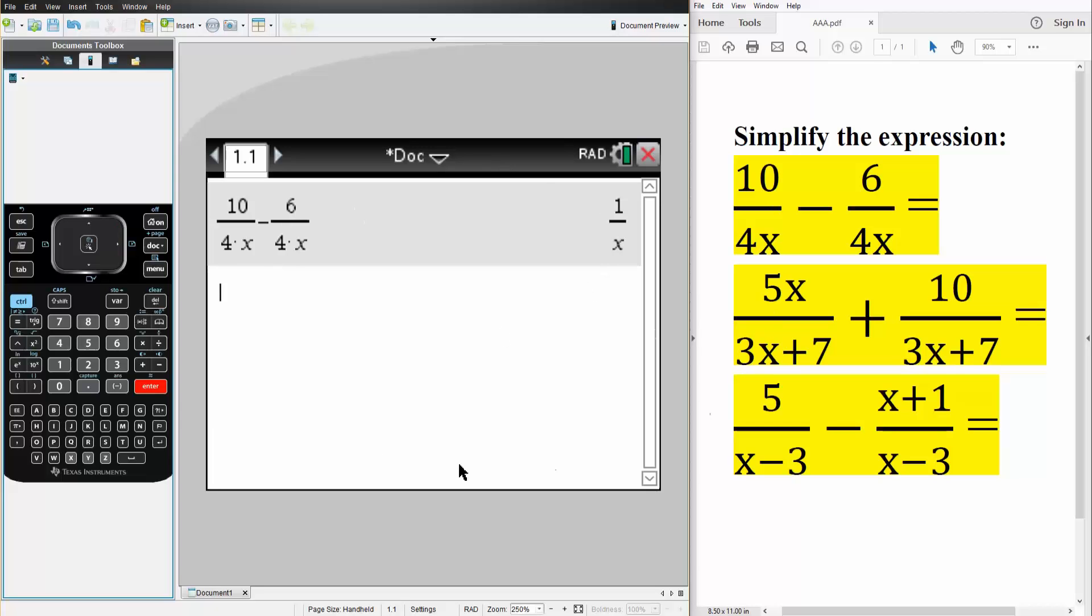Now we'll do the other two. Same exact method. Control, division, we have 5x divided by 3x plus 7 plus control, division, we have 10 divided by 3x plus 7. Hit enter. And we get 5 times parentheses x plus 2 divided by 3x plus 7.